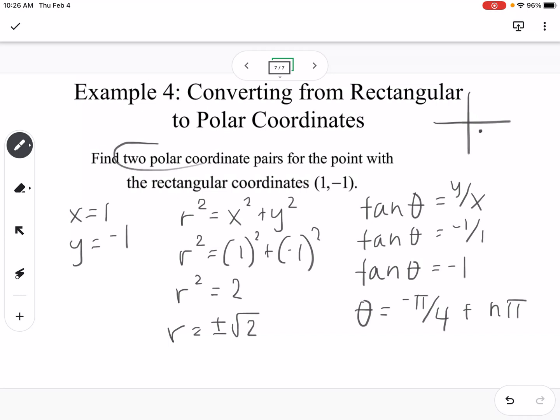So it says to find two polar coordinate pairs. So we know, so if we think it could be positive square root of 2, then it would have to be negative pi over 4, or it could be negative square root of 2. So think back to when we plotted our point. So we could go this distance, but then go in the negative direction. So that would be 3 pi over 4, and we would get that by taking negative pi over 4 plus pi. So those are our two polar coordinates that we can get for the point 1, negative 1.